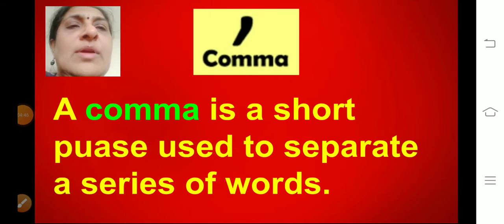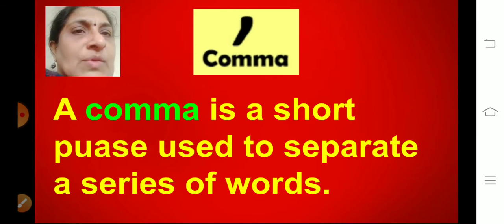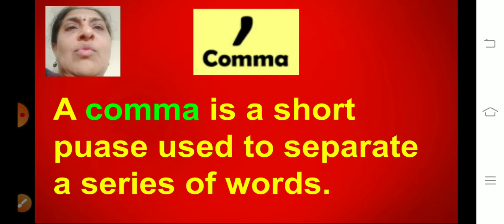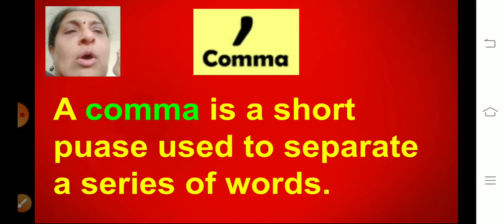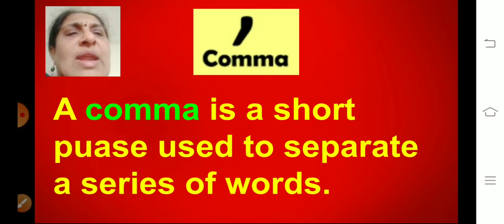So today we will learn the third punctuation mark, that is comma. What is a comma? A comma is a short pause used to separate a series of words. Whenever you are saying four or five words together, you have to stop a little — a slight little pause — and then go to the next word. So comma is a short pause; you have to stop a little before you speak the other word.